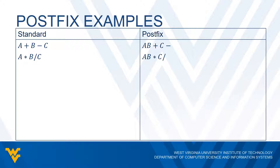For A times B divided by C, we do A times B first. So in postfix notation we have A, B, then the times symbol. Then to divide by C, we tack on C at the end followed by the divide symbol, because we're taking the result of A times B and dividing it by C.